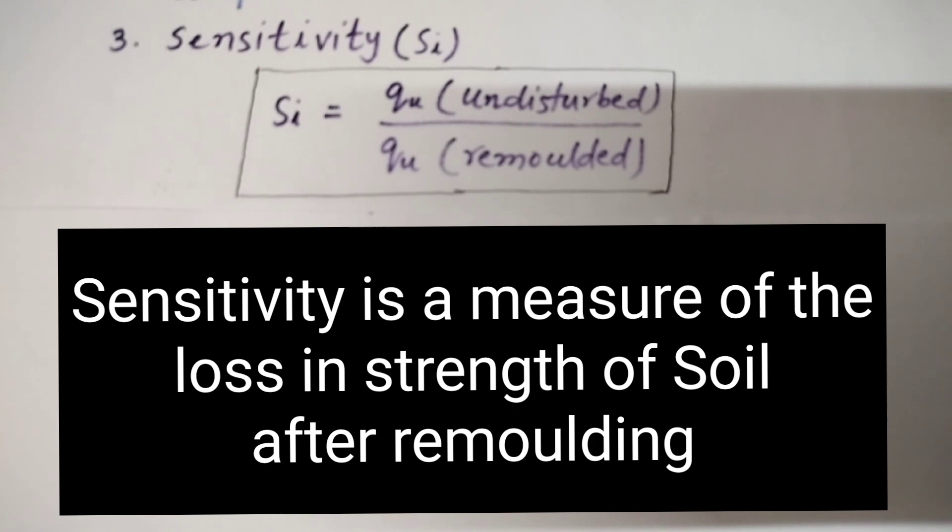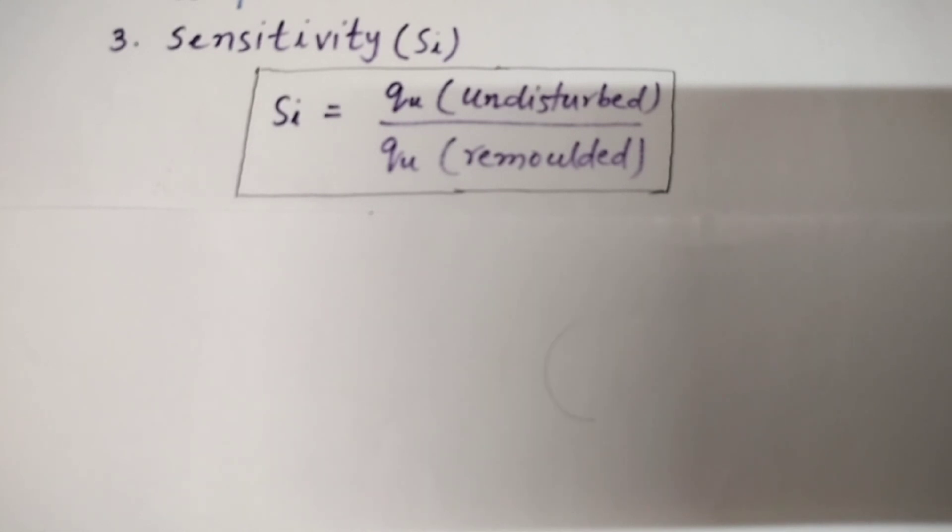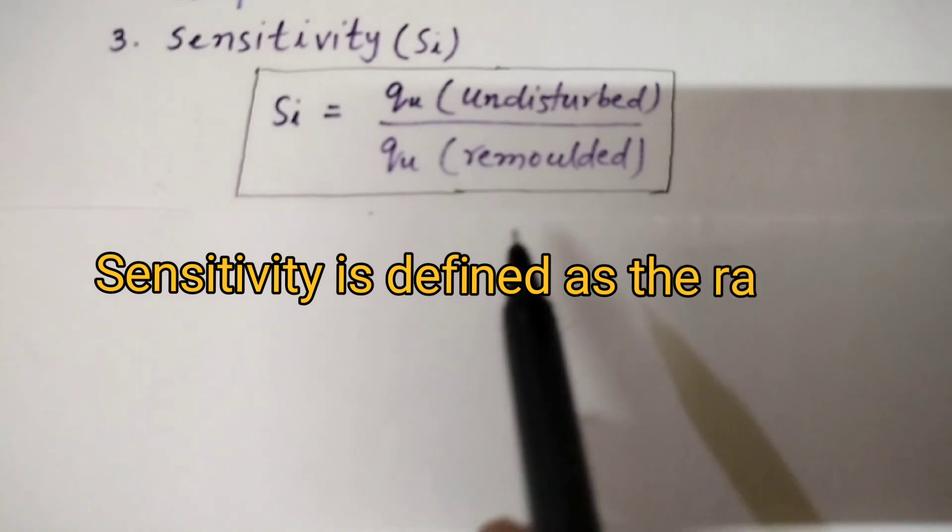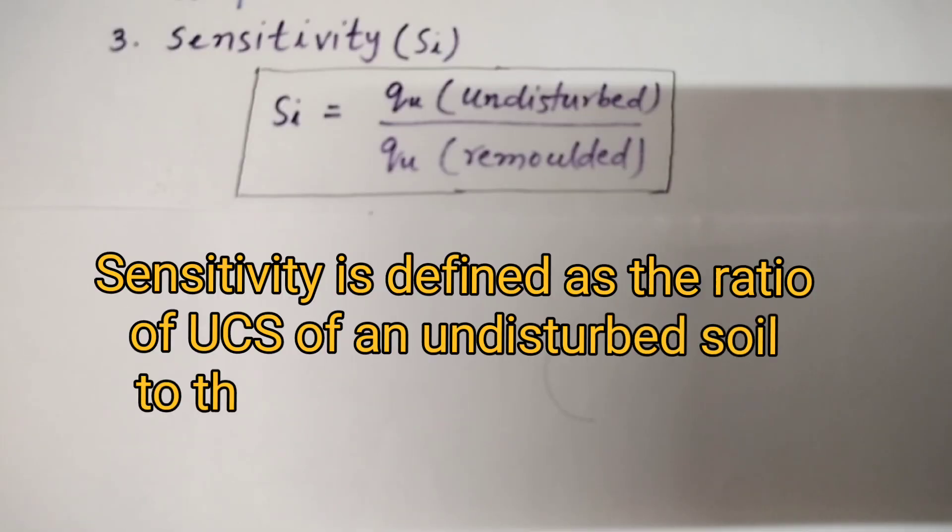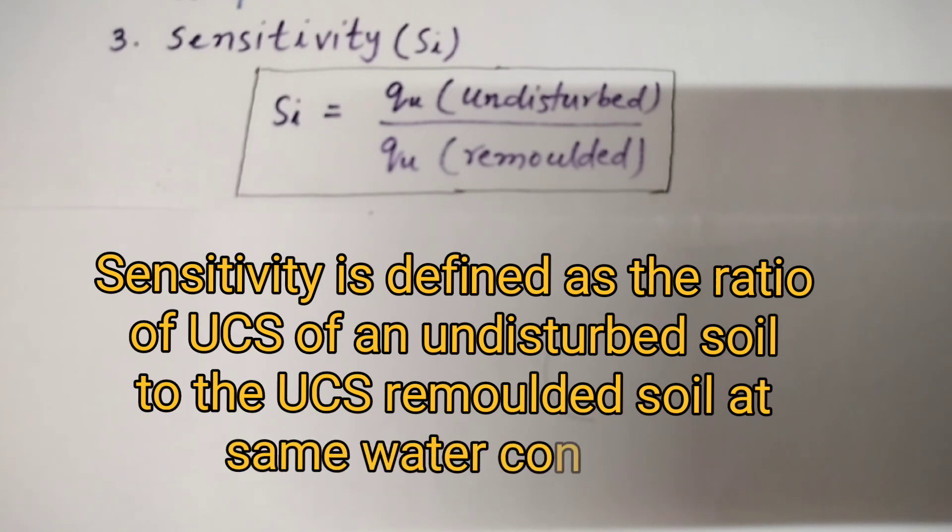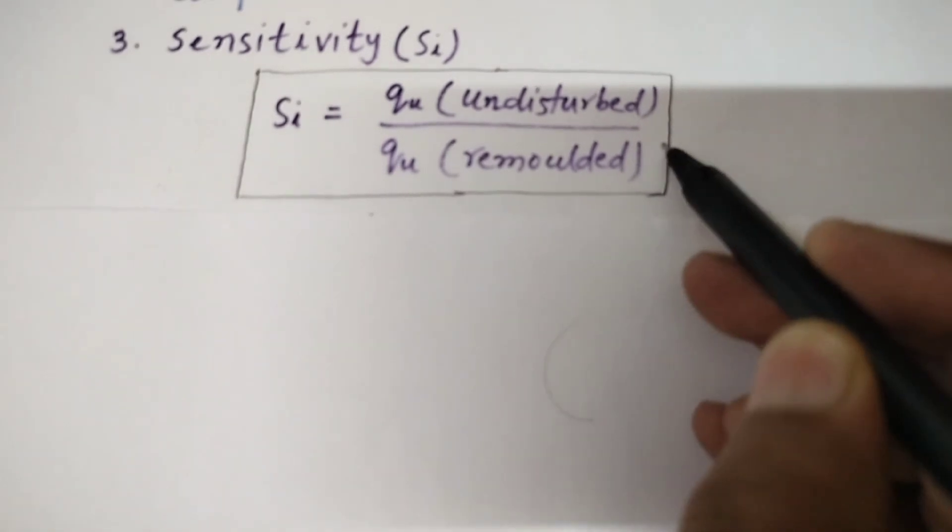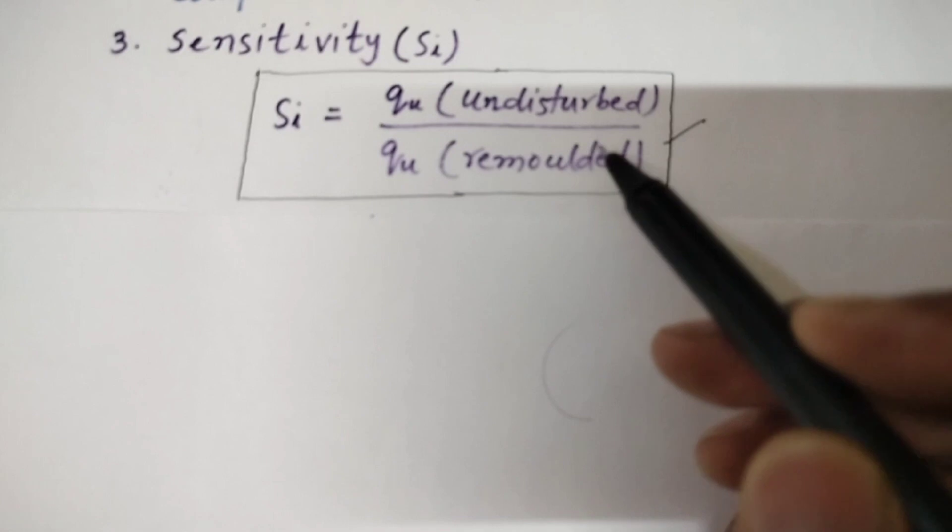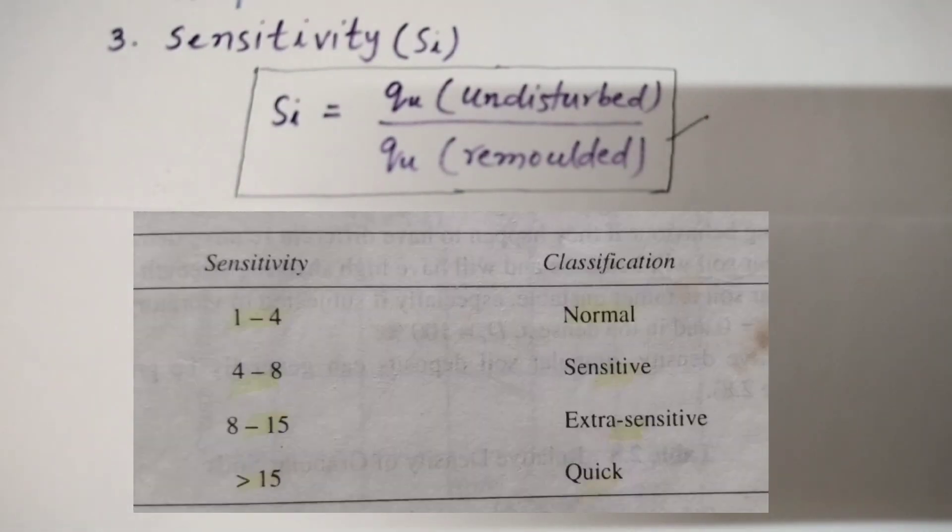Let us understand the meaning of sensitivity. Sensitivity is a measure of the loss in strength of soil as a result of remolding and is thus indicative of the effect of remolding on the consistency of a cohesive soil. Sensitivity is defined as the ratio of unconfined compressive strength of an undisturbed specimen of the soil to the unconfined compressive strength of a specimen of the same soil after remolding at unaltered water content. Here in the table below, we can classify the soil based on their sensitivity.